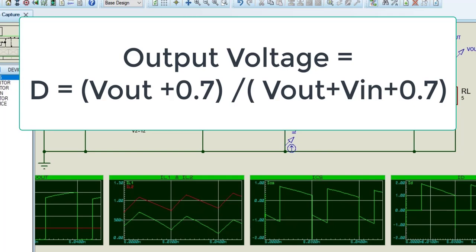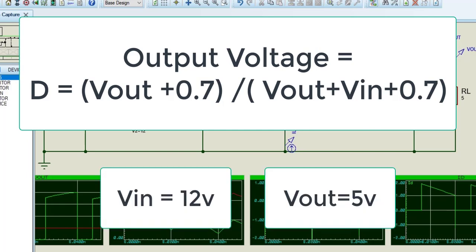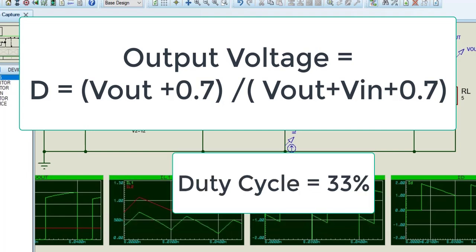We want to convert 12 volts input into 5 volts output. We can find the duty cycle value by using this formula, by putting input voltage and output voltage values. After putting these values, we get 0.33. That means we need almost 33% duty cycle to get output voltage of 5 volts from 12 volts input.